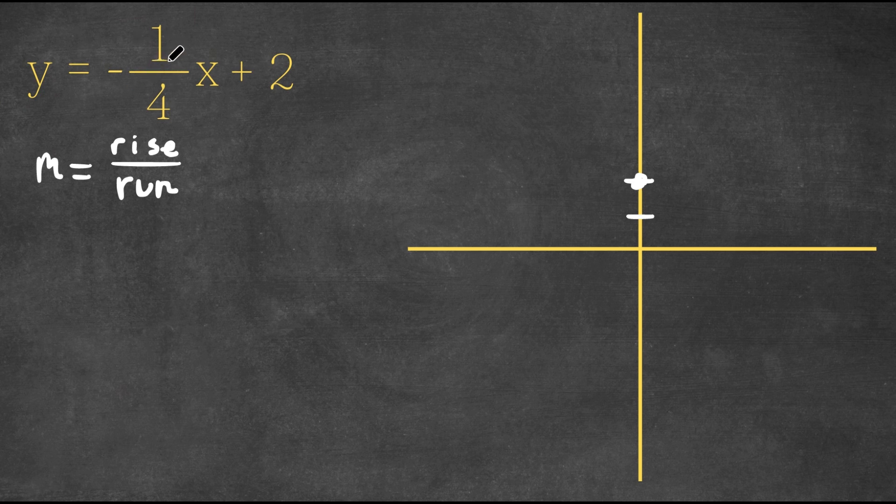Now this is where we use our slope. Our slope is negative one over four. So this can be in two ways. We could either have a negative one as our rise and a positive four as our run, or a positive one as our rise and a negative four as our run. So I'm first going to do a negative one as our rise and a positive four as our run.